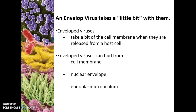The enveloped virus takes a bit of the membrane when it leaves the host cell. If the virus is in the cytoplasm and wants to leave, it pops through the cell membrane. If it was created within the nucleus, it would pull its envelope from the nuclear envelope. If it was within the endoplasmic reticulum being processed, it would pull its envelope from there as it moved through the layers.